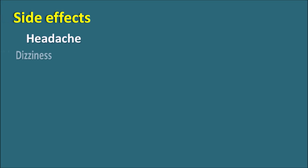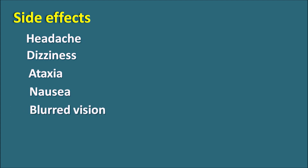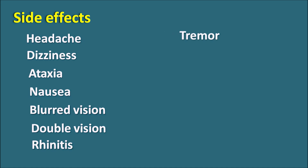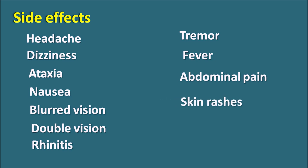The important side effects of lamotrigine are headache, dizziness, ataxia, loss of balance, and nausea. It can also affect vision, producing blurred vision as well as double vision. Symptoms like rhinitis and pharyngitis can also be observed. Apart from these, this drug can produce tremor and fever, which may indicate a hypersensitivity reaction. It can also produce abdominal pain and skin rashes. Importantly, this drug can produce fatal skin rashes that require hospitalization and immediate discontinuation of the drug.